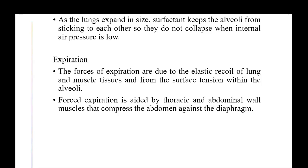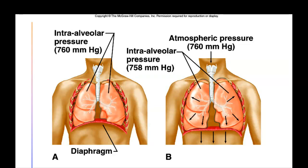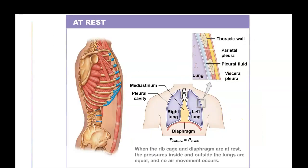Expiration is driven by the elastic recoil of lung and muscle tissue and from surface tension within the alveoli — the elastic fibers surrounding each alveolus contribute to this recoil. Forced expiration is aided by the thoracic and abdominal wall muscles compressing the abdomen against the diaphragm. Looking at the diagram, intra-alveolar pressure at rest is 760 mmHg; as the chest expands during inspiration it drops to 758 mmHg, driving air inward.